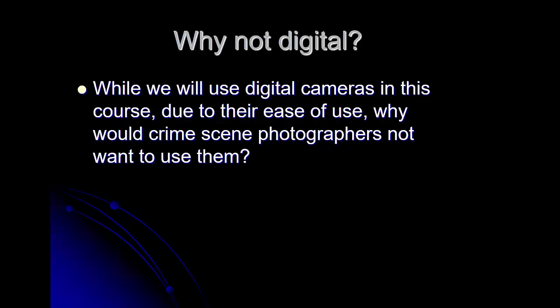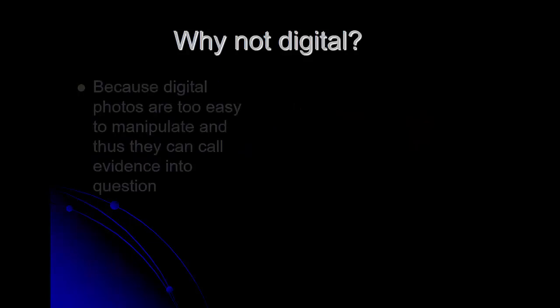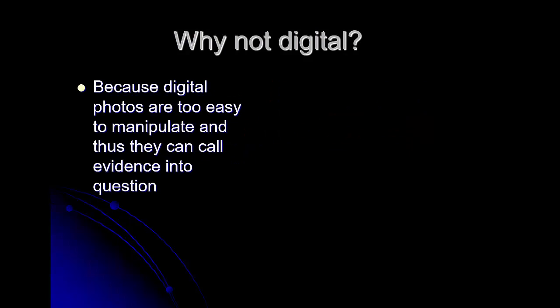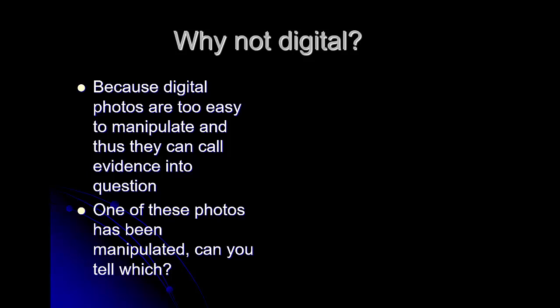We generally like to use film as our camera choice. While we're going to use digital cameras in this class — mainly the cameras on our cell phones, due to the fact that they're easy to use and easy to get — why would crime scene photographers not want to use them? They wouldn't want to use them because digital photos are too easy to manipulate, and thus can sometimes call evidence into question. If there's even the hint that a photo has been manipulated or photoshopped, that would be terrible when presenting that image in court.